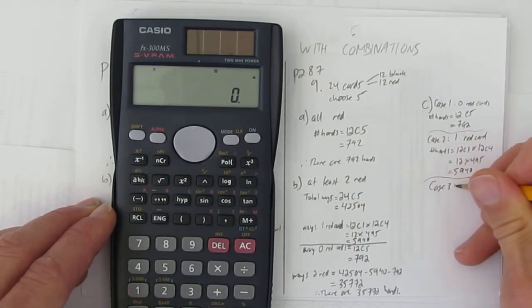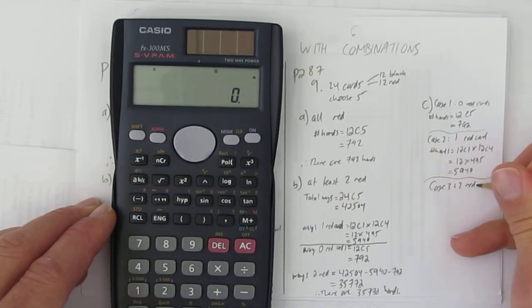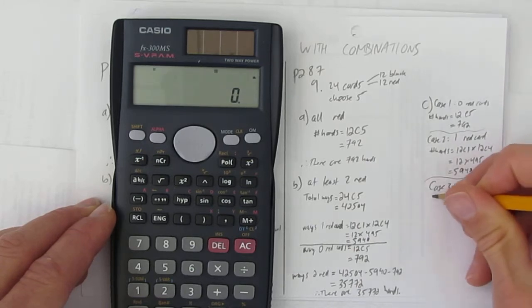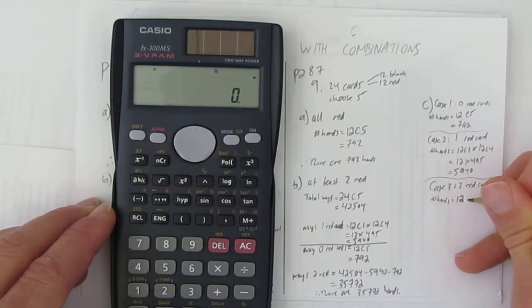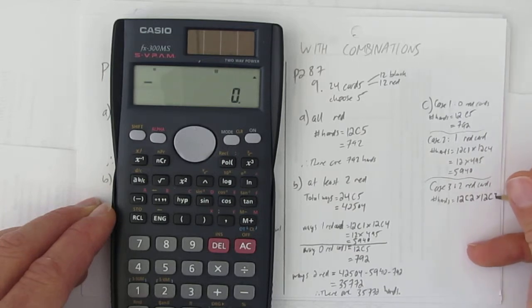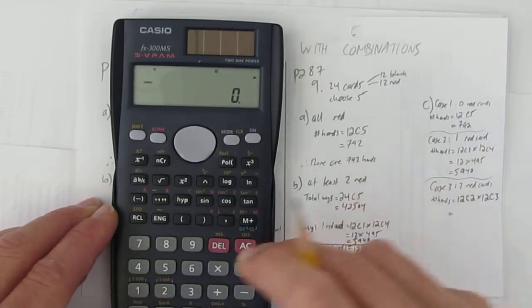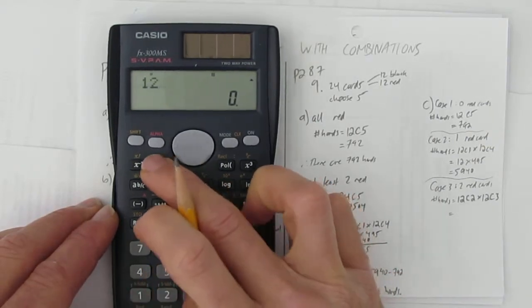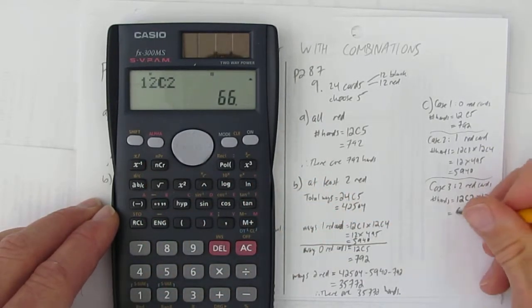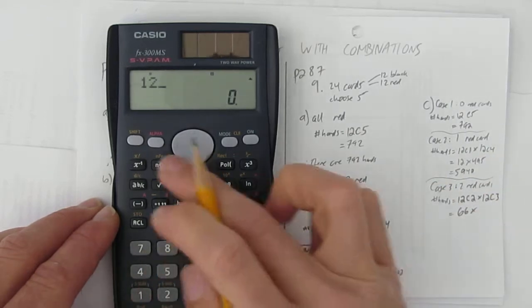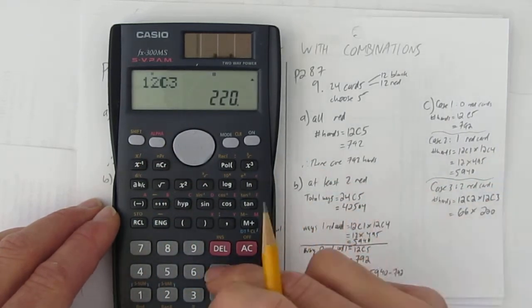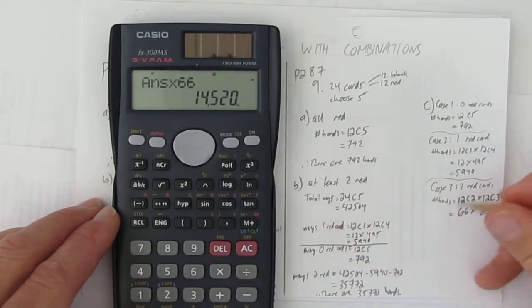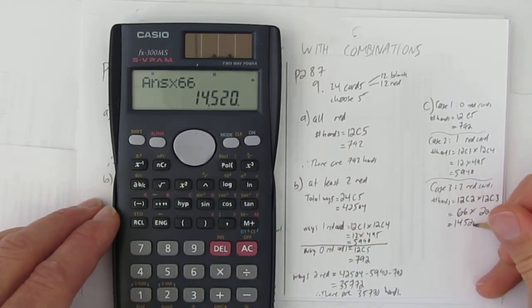In case three, you have exactly two red cards. If you had two red cards, the number of hands would be take from your 12 red cards and choose two. And multiply that by take from your 12 black cards and choose the other three. Now I have to do this. I'm calculating. 12 choose two. That's 66 times 12 choose three. That's 220. What's 220 times 66? 14,520.